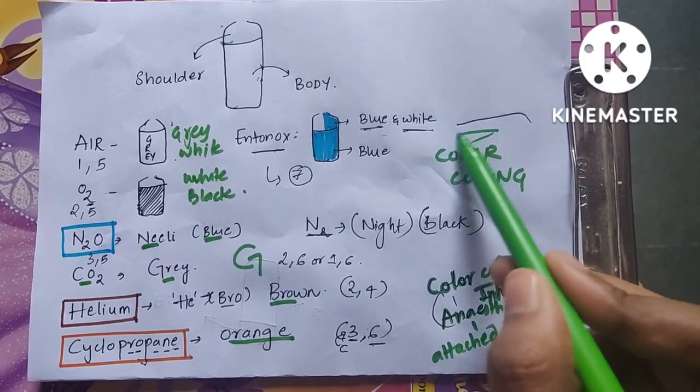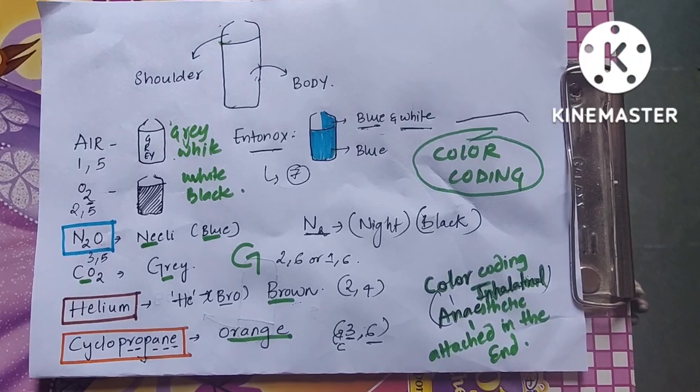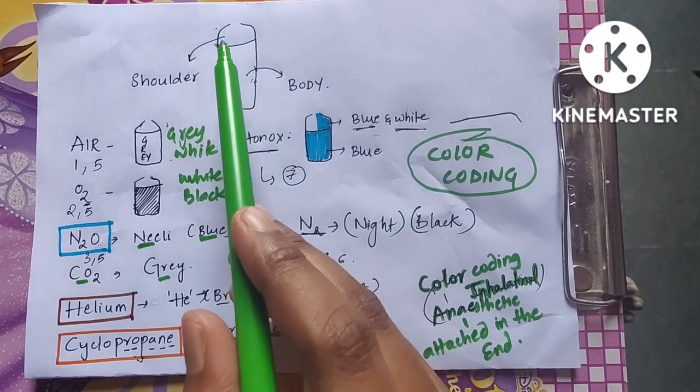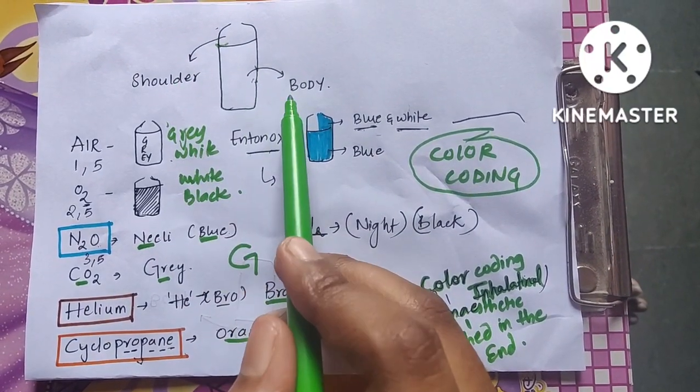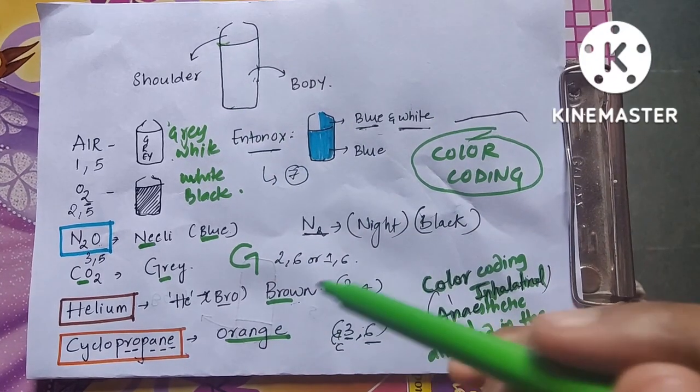Hey guys, let us learn about the color coding of different gas cylinders in anesthesia. This is the shoulder of the cylinder and this is the body of the cylinder. There are different color coatings you need to remember.